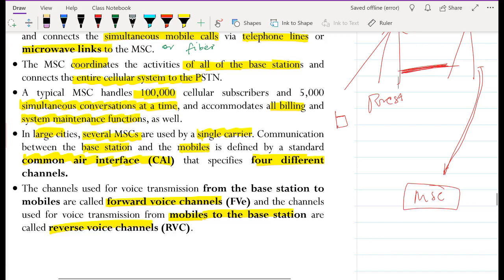The MSC coordinates the activities of all the base stations and connects the entire cellular system to the PSTN. A typical MSC handles approximately 100,000 cellular subscribers and can support maybe 5,000 simultaneous calls at a time, and accommodates all billing and system maintenance functions as well. As much as an MSC may support 100,000, they may not support all of them at the same time. In normal life, not all people call at the same time.